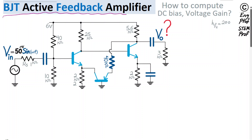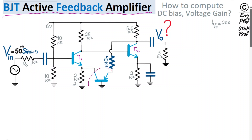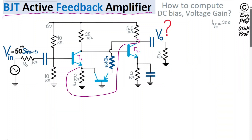The bipolar junction transistor active feedback amplifier circuit shown here is implemented using three transistors. Transistors T1 and T2 are NPN BJT transistors in the feedforward path from the input to the output, and we have a third transistor that is a PNP bipolar junction transistor in the feedback route, which samples the output voltage.